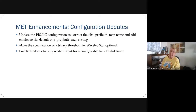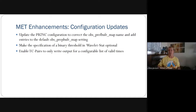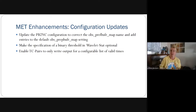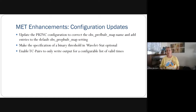Other configuration option updates: we updated PB2NC to correctly handle how the OBS prep buffer map name was used, and added entries for default OBS prep buffer map settings in consultation with EMC. There was a change to the binary threshold configuration option within wavelet stats to provide more flexibility for use with convection-allowing models, short-range weather applications, and looking at errors associated with those applications.